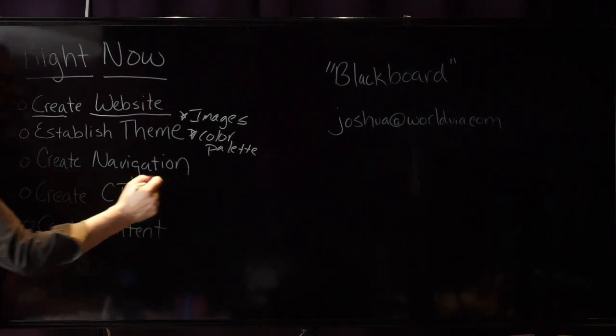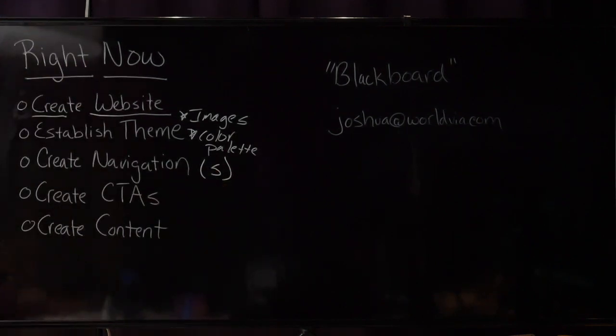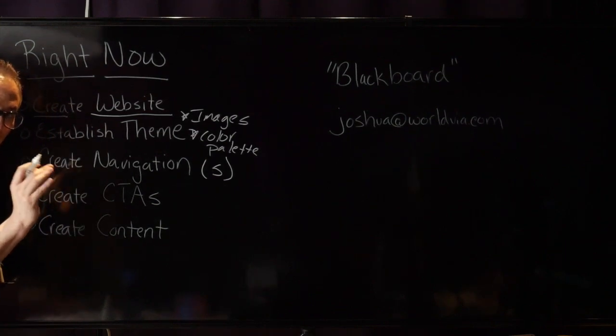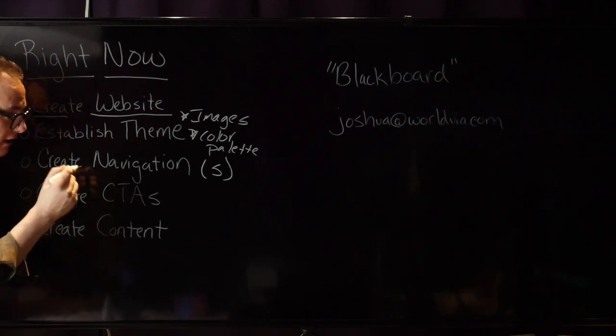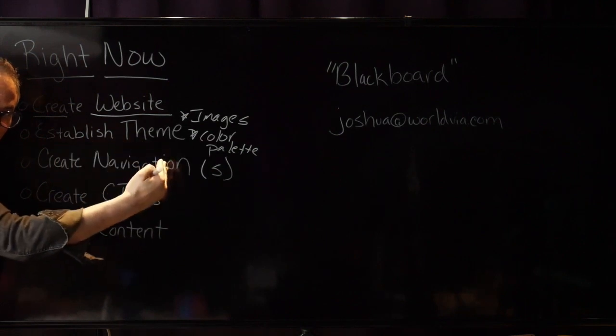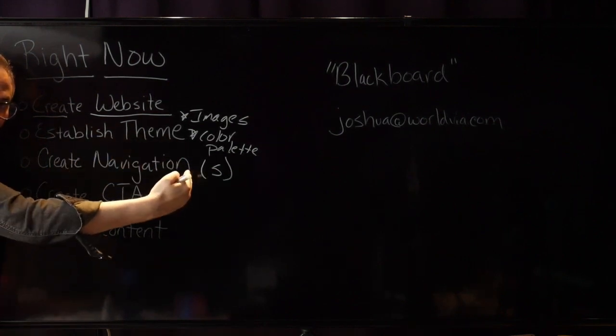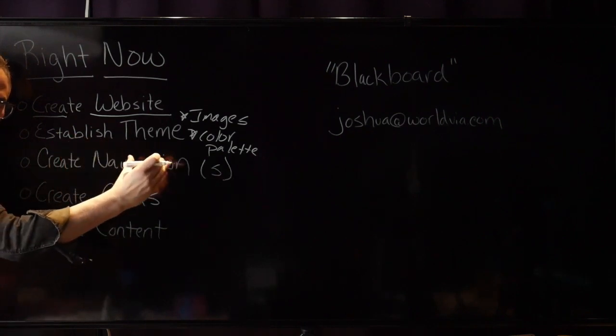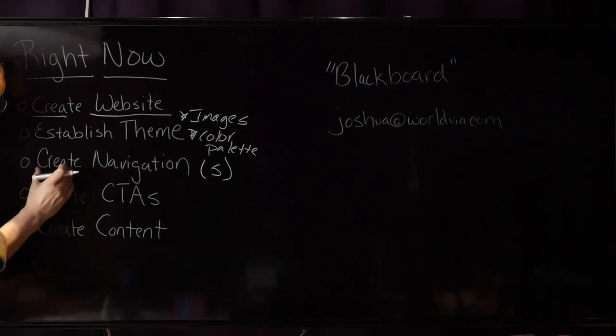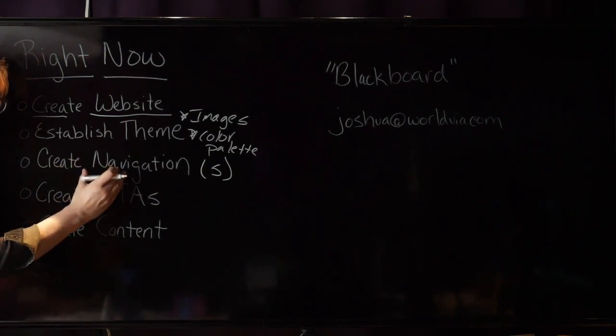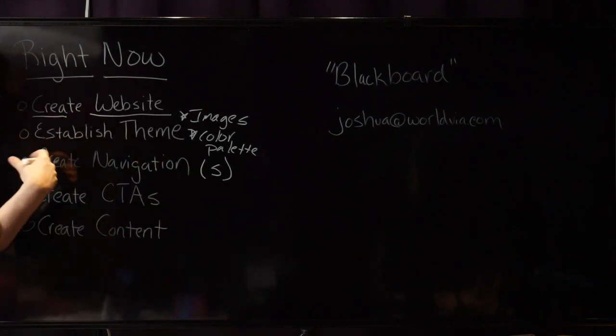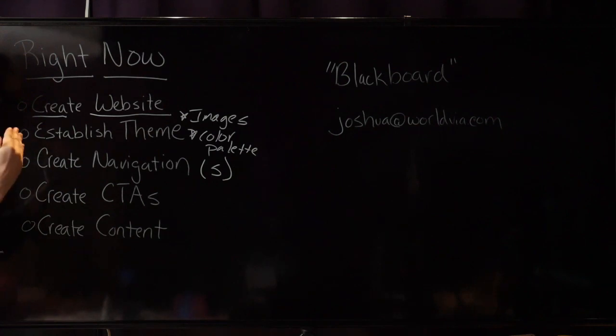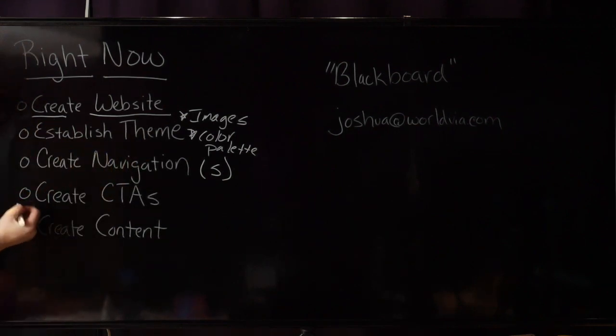Then establish a theme - this is where you can use those images that show what you sell and your color palette. Make sure that it sings with your theme. Create that navigation, remember the rule of five - no more than five menu items. Even though you probably don't use a website this way, some people actually follow in order from left to right and visit each page in that navigation all the way up to your call to action or contact me.